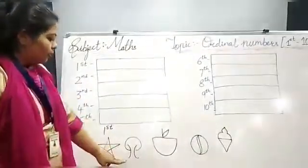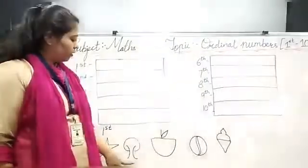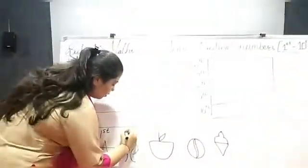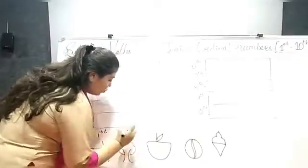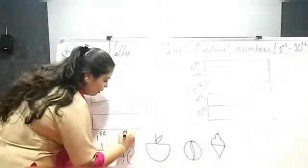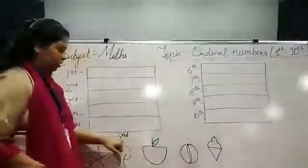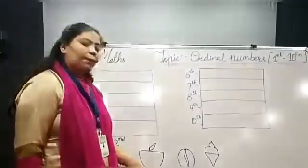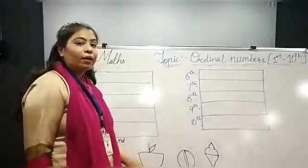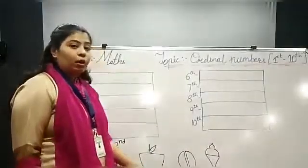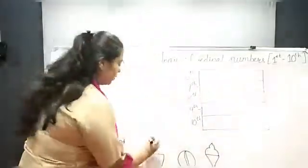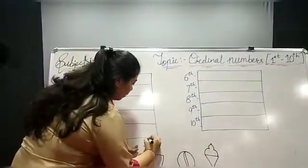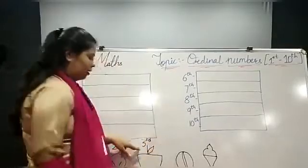Now, 2nd position आपको किसकी दिख रही है? So, how we will write 2nd? 2 जैसे हम लिखते हैं, वैसे 2 लिखेंगे, then 'nd'. So, क्या बोलते हैं? Second. Now, 3rd position आपको किसकी दिख रही है? Yes, apple. So, हम 3rd कैसे लिखेंगे? जैसे हम 3 लिखते हैं, वैसे ही 3 लिखेंगे, then उसके ऊपर 'rd'. Third.